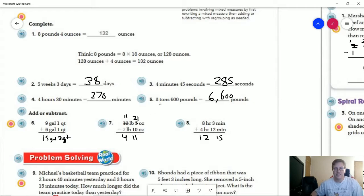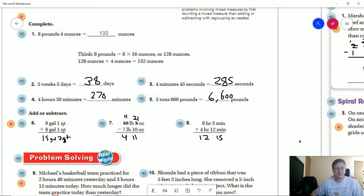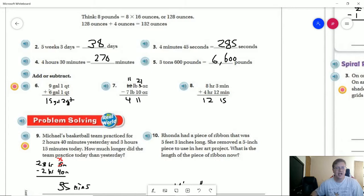For number five, we can do three tons is equal to 6,000 pounds. 6,000 plus 600 gives us 6,600. For number six, there are four quarts in a gallon. So we don't need to worry about regrouping and adding another gallon here. So we're going to have 15 gallons and two quarts.